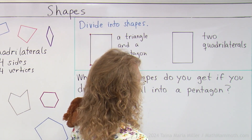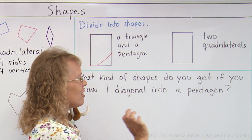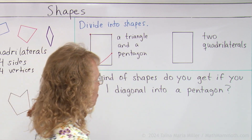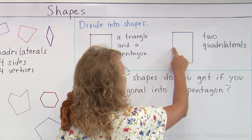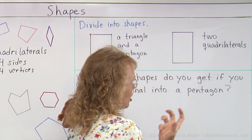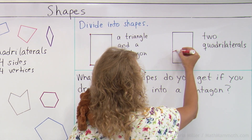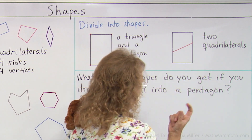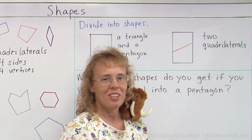Two quadrilaterals. Can you see where you would draw a line into that shape to get two quadrilaterals? There are many different ways you can do that. One is just like here — you would actually get two rectangles, which are quadrilaterals. Or you can draw your line kind of like that, and then you have one, two, three, four corners on one side and one, two, three, four corners on the other shape too.